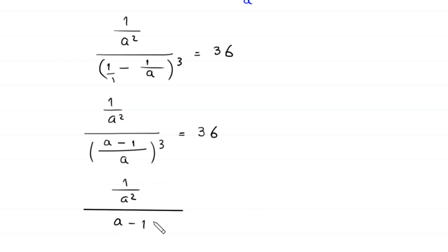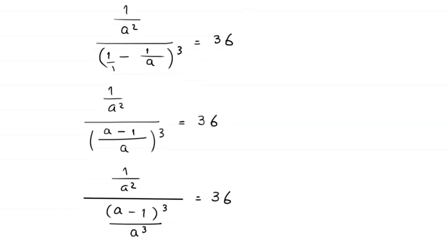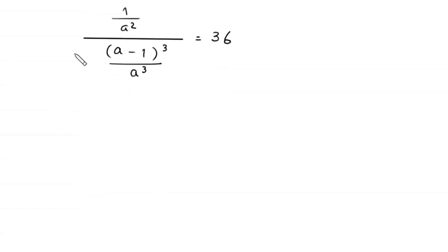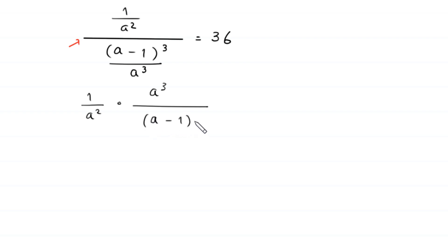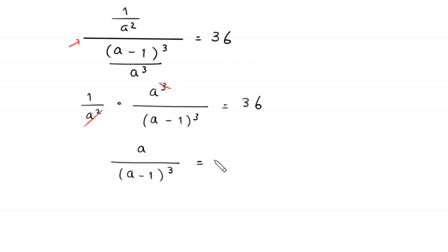We can write the denominator: (1 minus 1/a) cubed equals (a minus 1) cubed divided by a cubed. Changing the division to multiplication, this becomes (1 over a squared) multiplied by a cubed divided by (a minus 1) cubed equals 36. The a squared cancels with part of the cube, leaving a divided by (a minus 1) cubed equals 36.